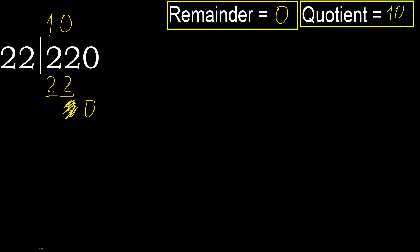220 divided by 22 is 10. 220 divided by 22 — the divisor is 22.